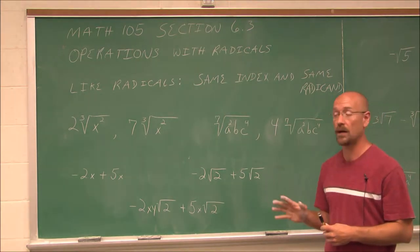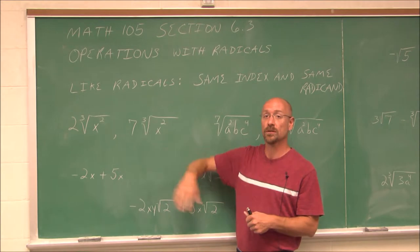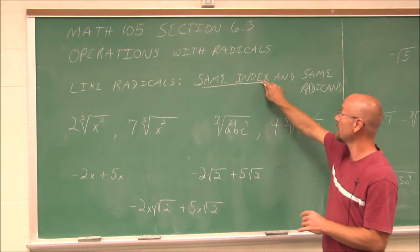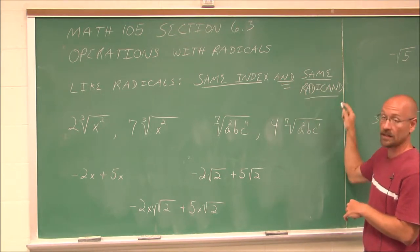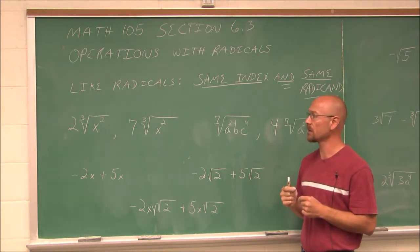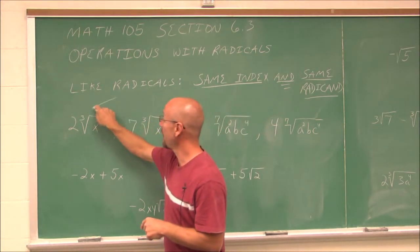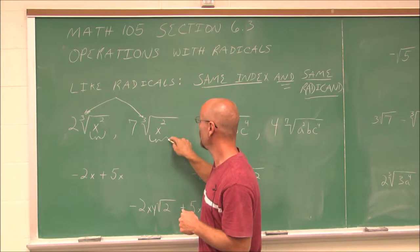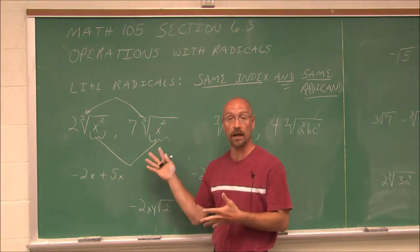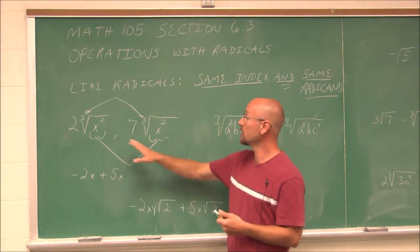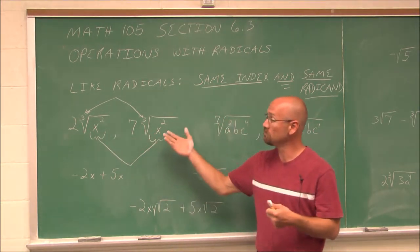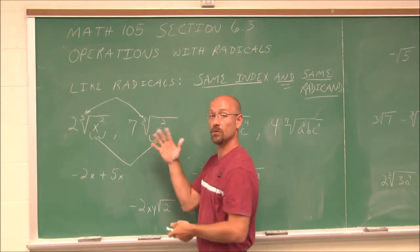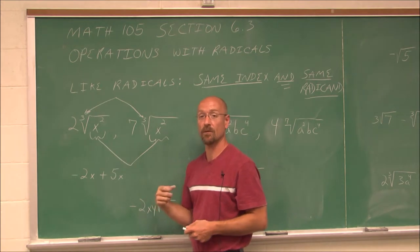The key that we have to first identify when working with radicals is like radicals. Just like like terms, we have to find like radicals. A like radical is defined as having the same index and — that's very important — and the same radicand. They have to have both of these in order to be like radicals. The index is the small number, and everything under that radical is defined as the radicand.